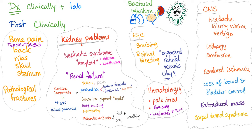Kidney problems such as nephrotic syndrome occur due to amyloidosis. Symptoms of nephrotic syndrome include edema and xanthoma from hyperlipidemia. Renal failure leads to a yellow, pale patient. Sometimes there is uremic pericarditis, so the patient leans forward because lying back stretches the pericardium and causes pain.